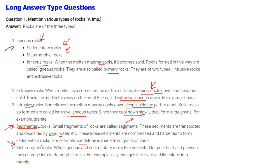Then we have metamorphic rocks. When igneous and sedimentary rocks are subjected to great heat and pressure, high heat and pressure, they change into metamorphic rocks. For instance, clay changes to slate, limestone changes to marble.